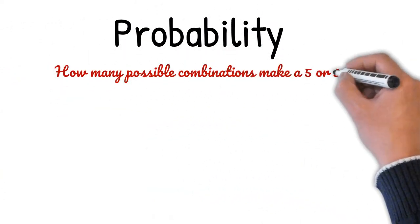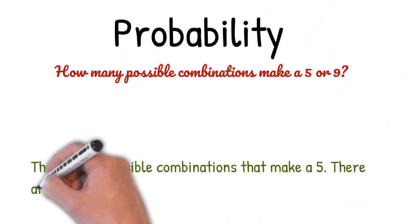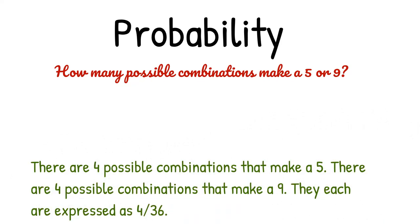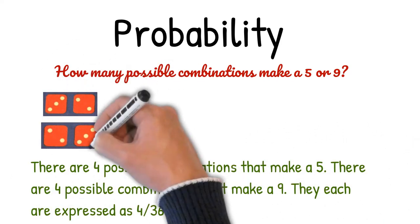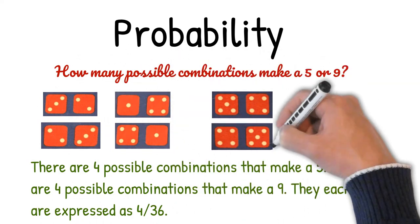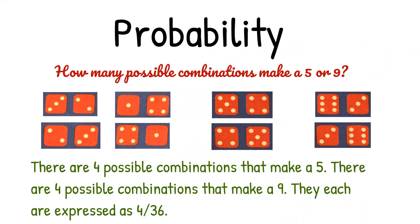How many possible combinations make a five or nine? There are four possible combinations that make a five and four that make a nine, each expressed as four out of thirty-six. The possible combinations for five are three-two, two-three, one-four, and four-one. The possible combinations for nine are five-four, four-five, six-three, and three-six.